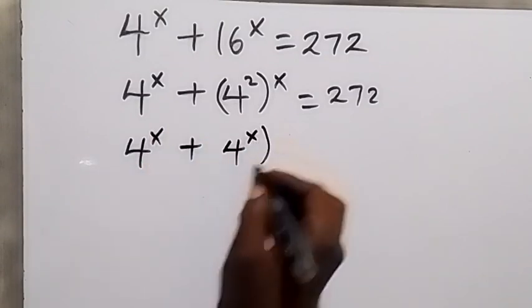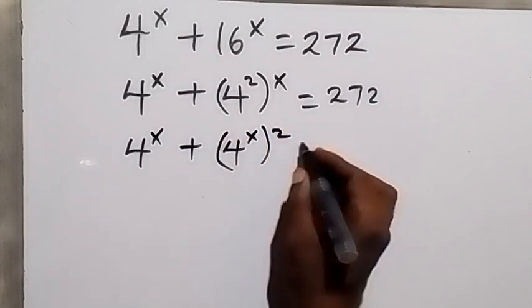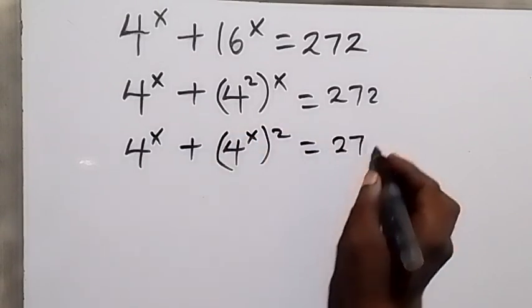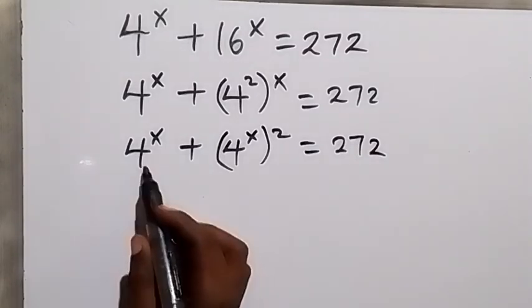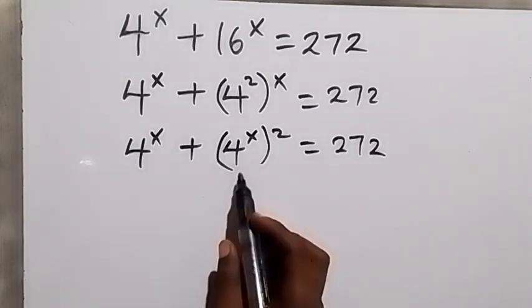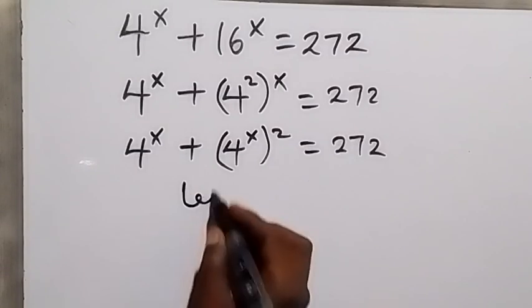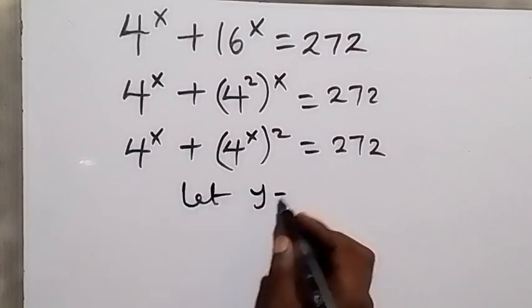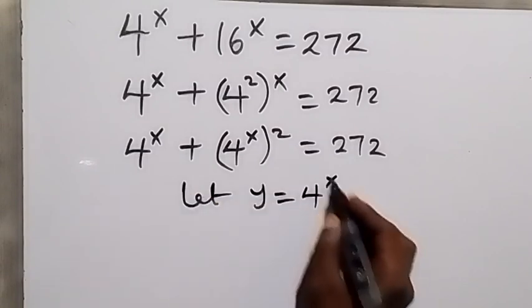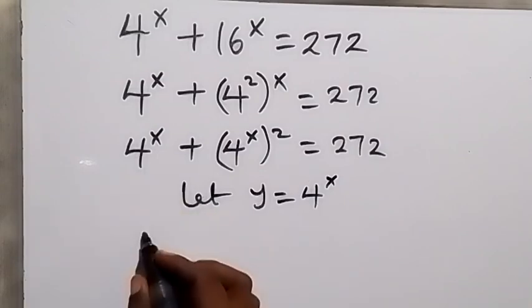then to power 2 equals 272. In the next step, we have 4 to power x, 4 to power x, so let y be equals to 4 to power x. From here, this equation becomes y